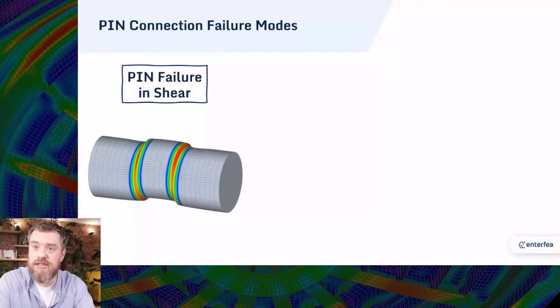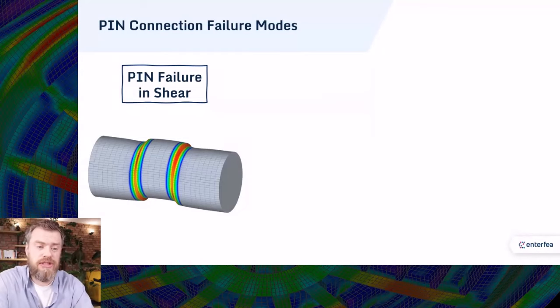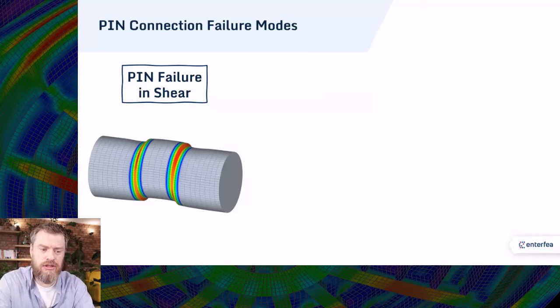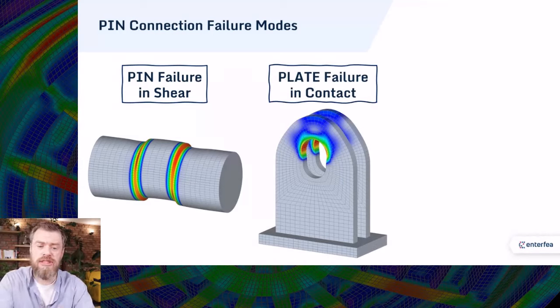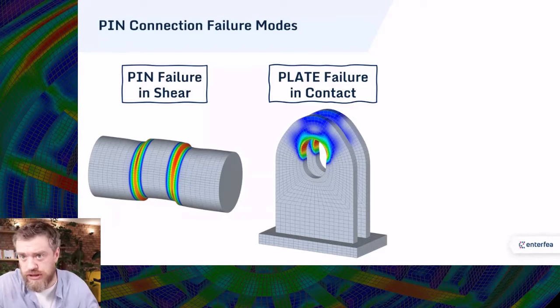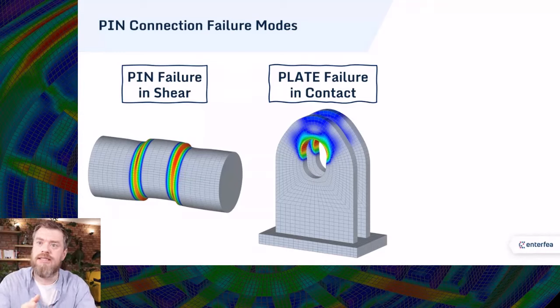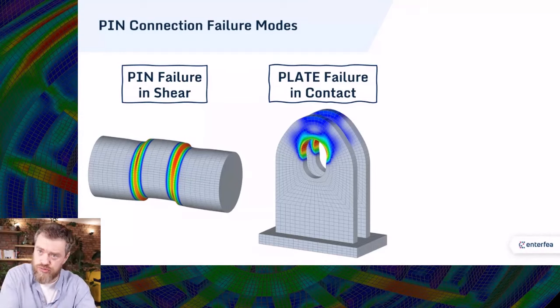I think the one easiest to imagine would be the failure of a pin due to shear. You can see it here. Also, the one that is very commonly seen would be a contact failure of the plate. In other words, the pin is strong enough, but it pushes so strongly against the opening that the plate yields due to this contact pressure. It simply fails.